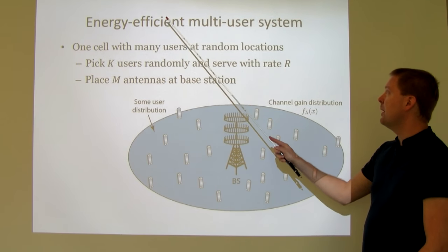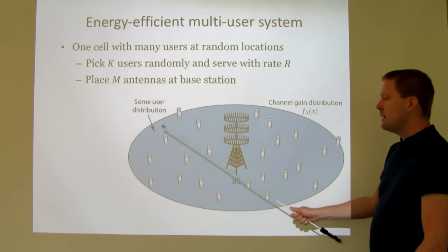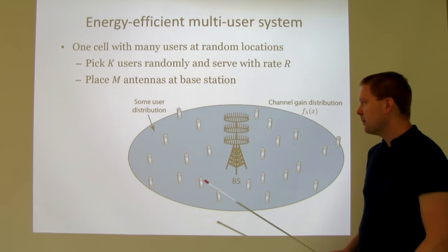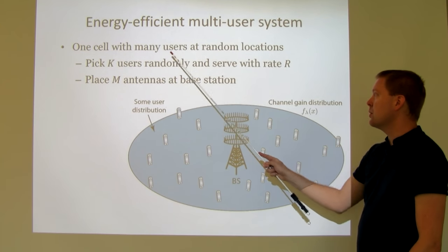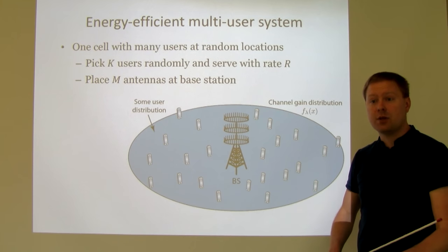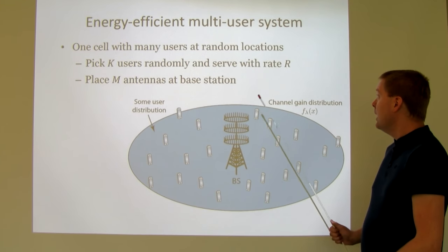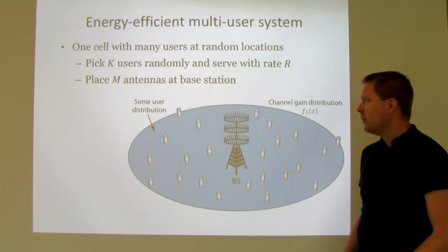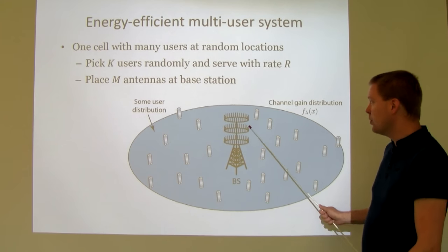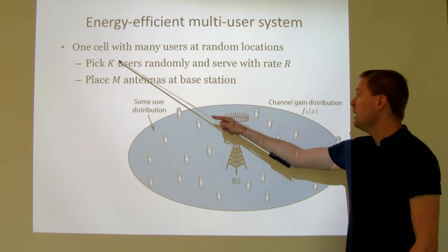The first example is an energy-efficient multi-user system. We have a cell with a base station in the middle, many users distributed across the cell according to some probability distribution. From this cell, I can pick K users randomly with certain random locations. I would like to serve them with rate r from a base station with M antennas — which could be one antenna or up to a hundred, as illustrated. My goal is to optimize K, r, and M to maximize energy efficiency.